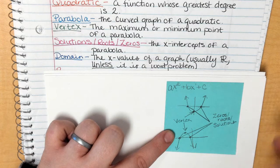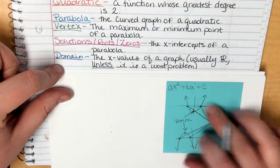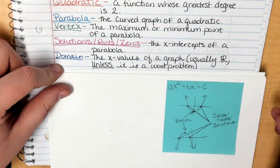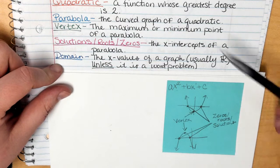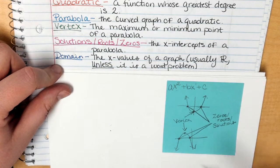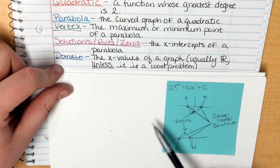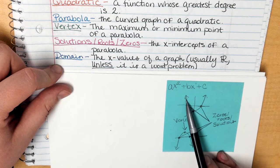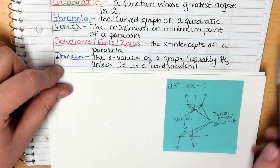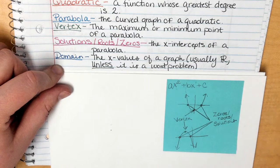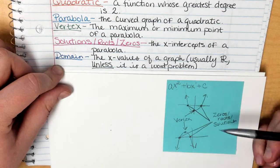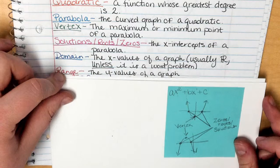Domain is the next important feature we find on parabolas, and it is ℝ — all real numbers. That means everything from negative infinity to positive infinity, because the arrows continue to go left and right forever, making the domain all real numbers.